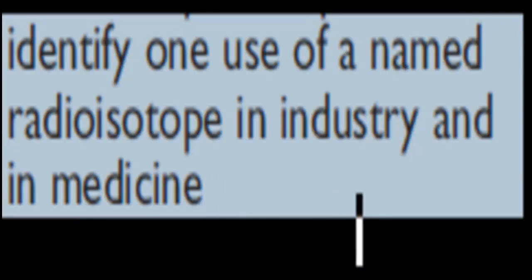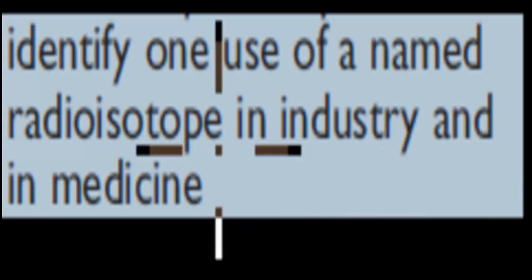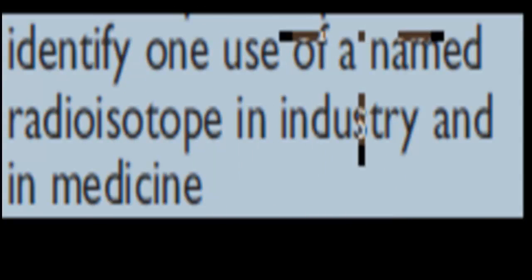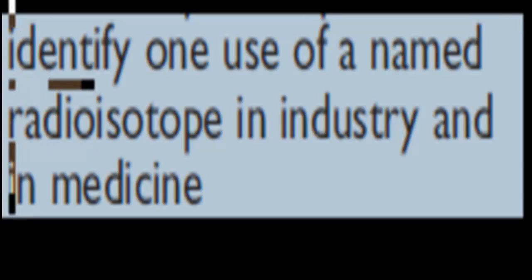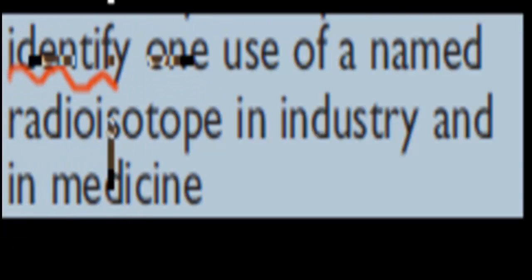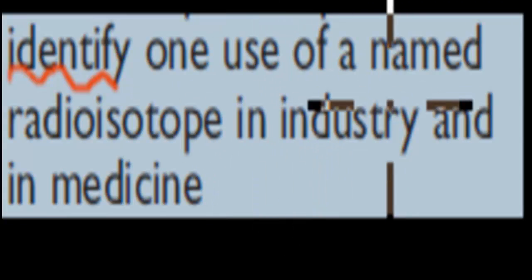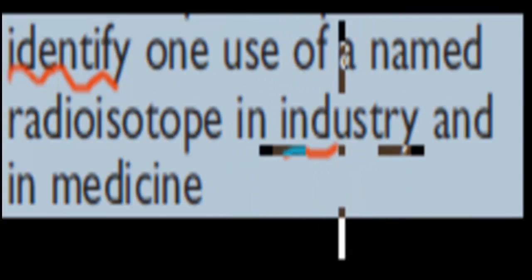Welcome back. In the last video we talked about how radioisotopes are produced when it comes to industrial and commercial radioisotopes. In this video we're going to cover this next point which says identify one use of a named radioisotope in industry and in medicine. So all you really need to know is you need to be able to name the use of a named radioisotope in both industry and medicine.